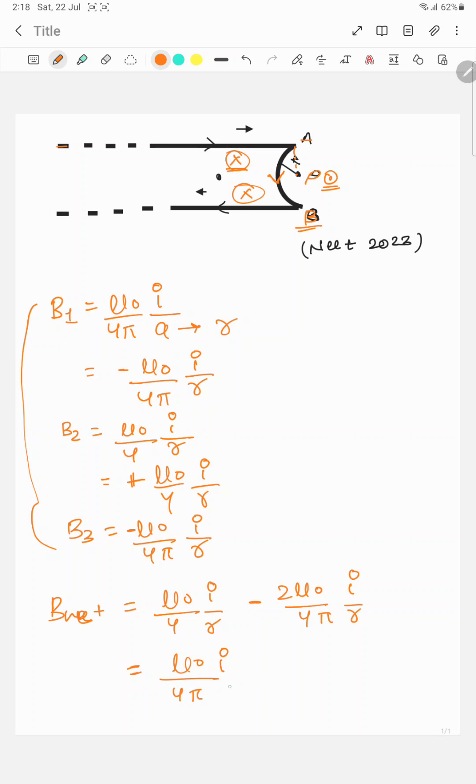Taking mu0 upon 4, I by R as common, 1 minus 2, 1 minus 2 upon pi. So here is the answer.